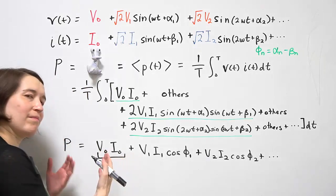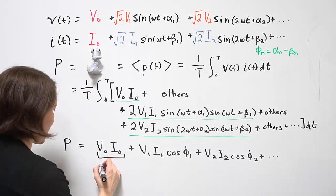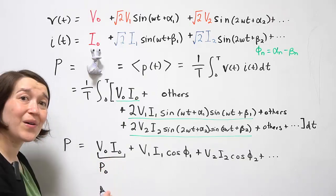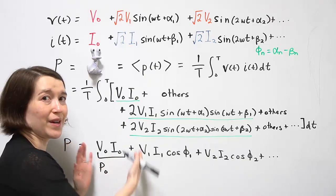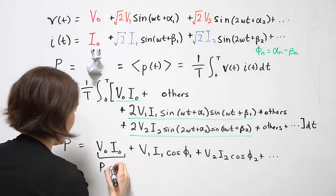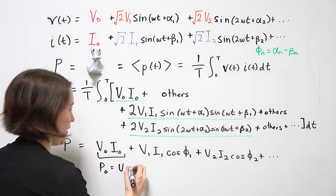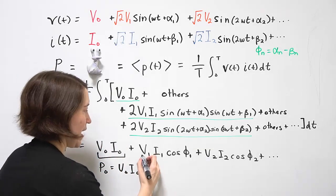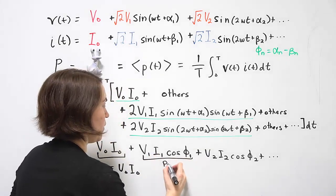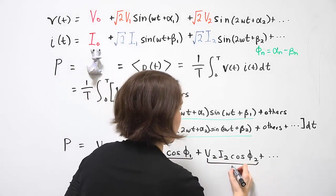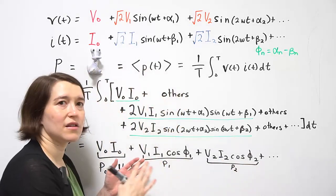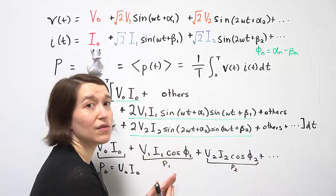We can make this term, call this term P0. So this is the power for just the DC component. And that by definition is V0I0. And we can call this one P1, this one P2. Essentially this is the power for each of the individual frequencies.